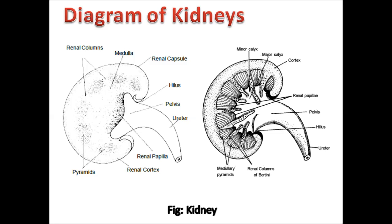This is the diagrammatic view of the kidney. In short notes and broad questions, these are the major diagrams that should be included. This is the actual diagrammatic view of the kidney: the left-hand side shows the covered kidney structure and the right-hand side shows the bisected or dissected kidney structure where the different parts of the kidney are revealed.